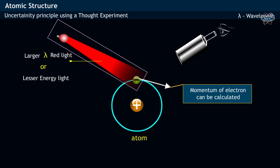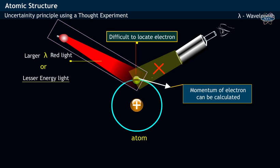But using this larger wavelength light having low energy, we may not be able to locate the position of an electron.